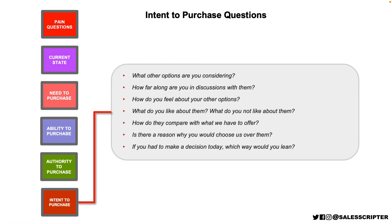Questions to measure intent to purchase include: 'What other options are you considering?' — always ask about other vendors or products directly without being scared to do so. 'How far along are you in discussions with them?' — it's helpful to know if you're at the same stage or behind. 'How do you feel about your other options? What do you like about them? What do you not like? How do they compare to what we offer? Is there a reason you would choose us over them? If you had to make a decision today, which way would you lean?'